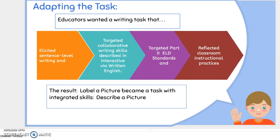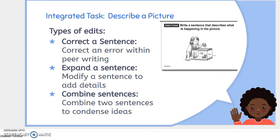So what was the result? 'Label a picture' became 'describe a picture.' For example, now an integrated task is to correct an error within peer writing — somebody gets a written passage and the student corrects it — or you expand a sentence, modify a sentence, or combine sentences for the writing section.